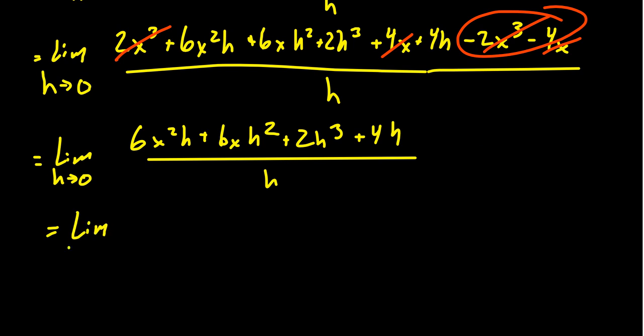So we get the limit as h goes to 0, factor out the h. So that left behind 6x² because we took away the h. Then we're going to get 6xh. We took away one of the h's. Then you get 2h². We took away one of the h's. And you're left with +4. This all sits above the h.